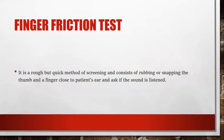Finger friction test: from the name itself we get an idea of what this test involves. It is a rough but quick method of screening, consisting of rubbing or snapping the thumb and finger close to the patient's ear and asking if the sound is heard. Normally, a patient with normal hearing capacity can hear the rubbing sound of the thumb and finger. If the patient has any hearing problem, they may have difficulty hearing.